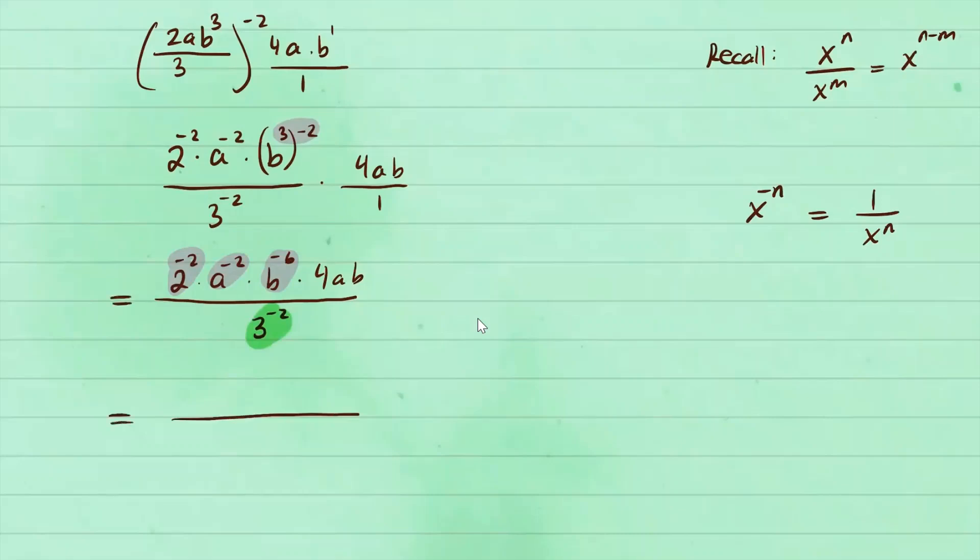So we have 3 to the positive 2, that will be on top. And we still have 4ab because those exponents are positive. And then the remaining ones on the front will be on the bottom. Now they have positive exponents. 2 to the square, a to the second power, b to the sixth power.